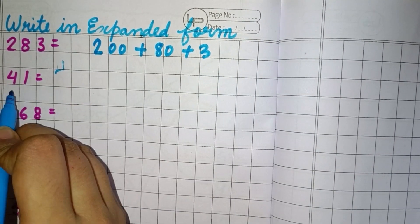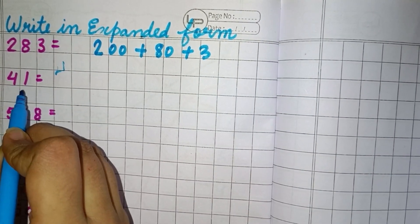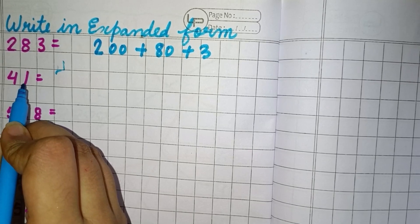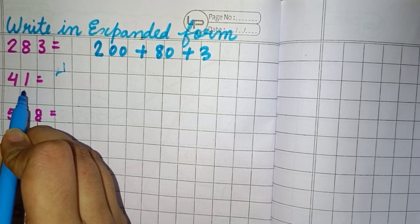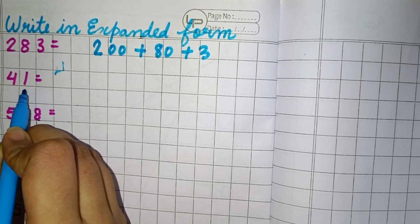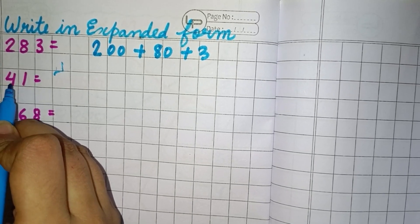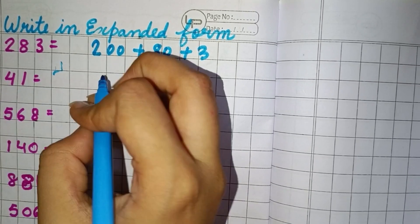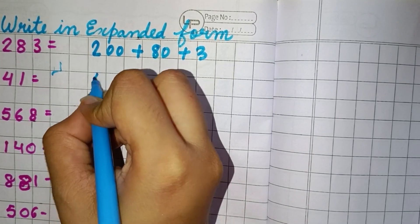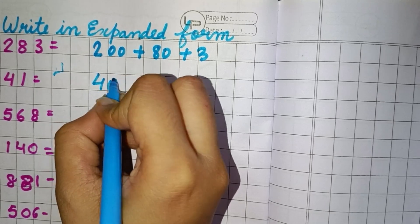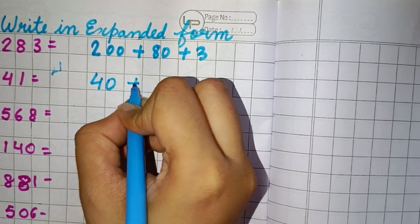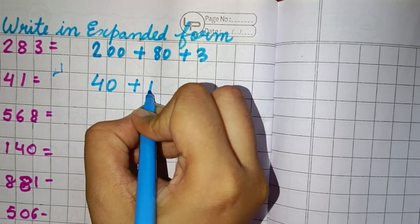Now the next number is 41. So we can see 1 is in 1's place and 4 is in 10's place. So we will write here 40 plus 1.